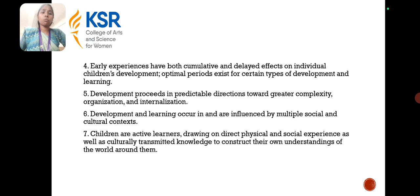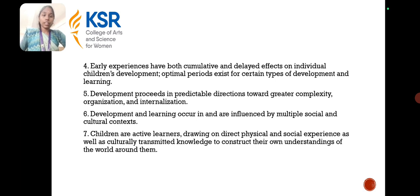Early experiences have both cumulative and delayed effects on individual children's development. Optimal periods exist for certain types of development and learning, and development proceeds in a predictable direction towards greater complexity, organization, and internalization. Development and learning occur in and are influenced by multiple social and cultural contexts. Children are active learners, drawing on direct physical and social experiences as well as culturally transmitted knowledge to construct their own understanding of the world around them.